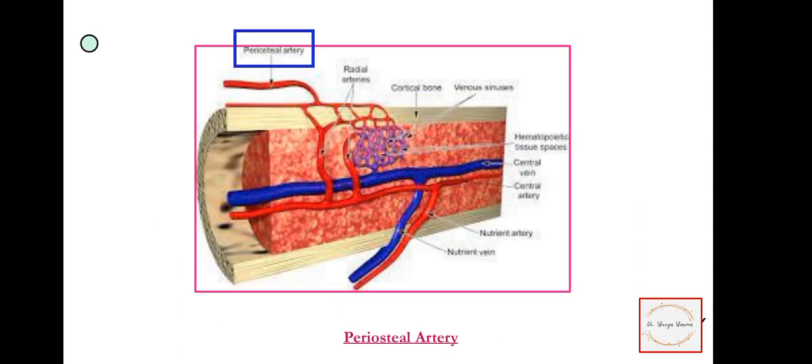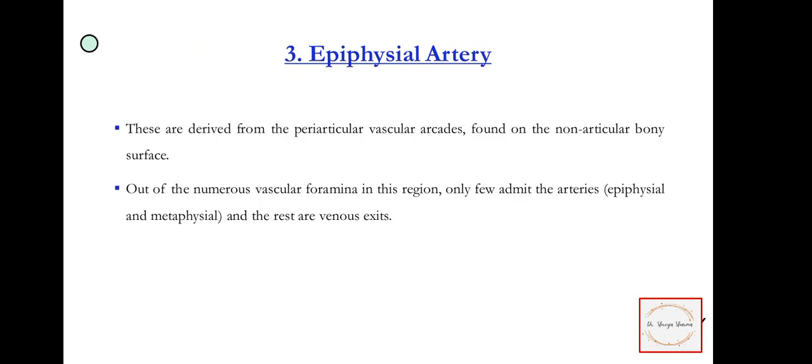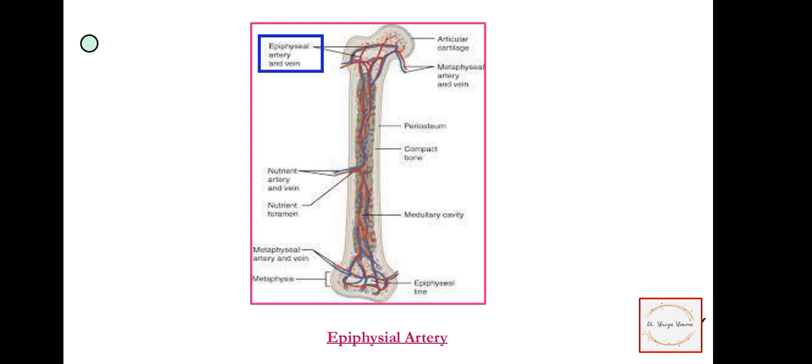In the blue box I have mentioned about the periosteal arteries. Now the epiphysial artery. These are derived from the periarticular vascular arcades found on the non-articular bony surface. Out of the numerous vascular foramina in this region, only a few admit the artery and the rest are venous exits. You can see here the epiphysial artery.